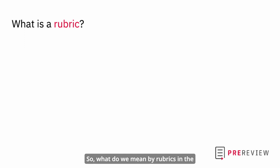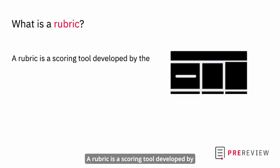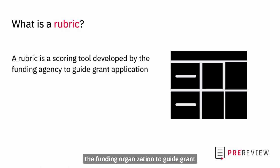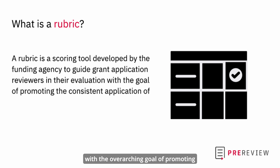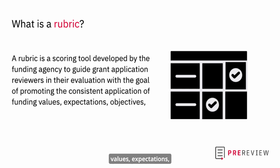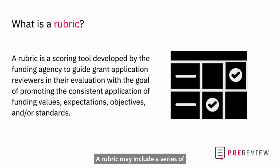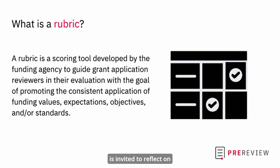So what do we mean by rubrics in the context of the grant review process? A rubric is a scoring tool developed by the funding organization to guide grant application reviewers in their evaluation, with the overarching goal of promoting the consistent application of funding values, expectations, objectives, or standards. A rubric may include a series of statements or questions grouped within categories that a reviewer is invited to reflect on and answer, following a clearly stated scoring system.